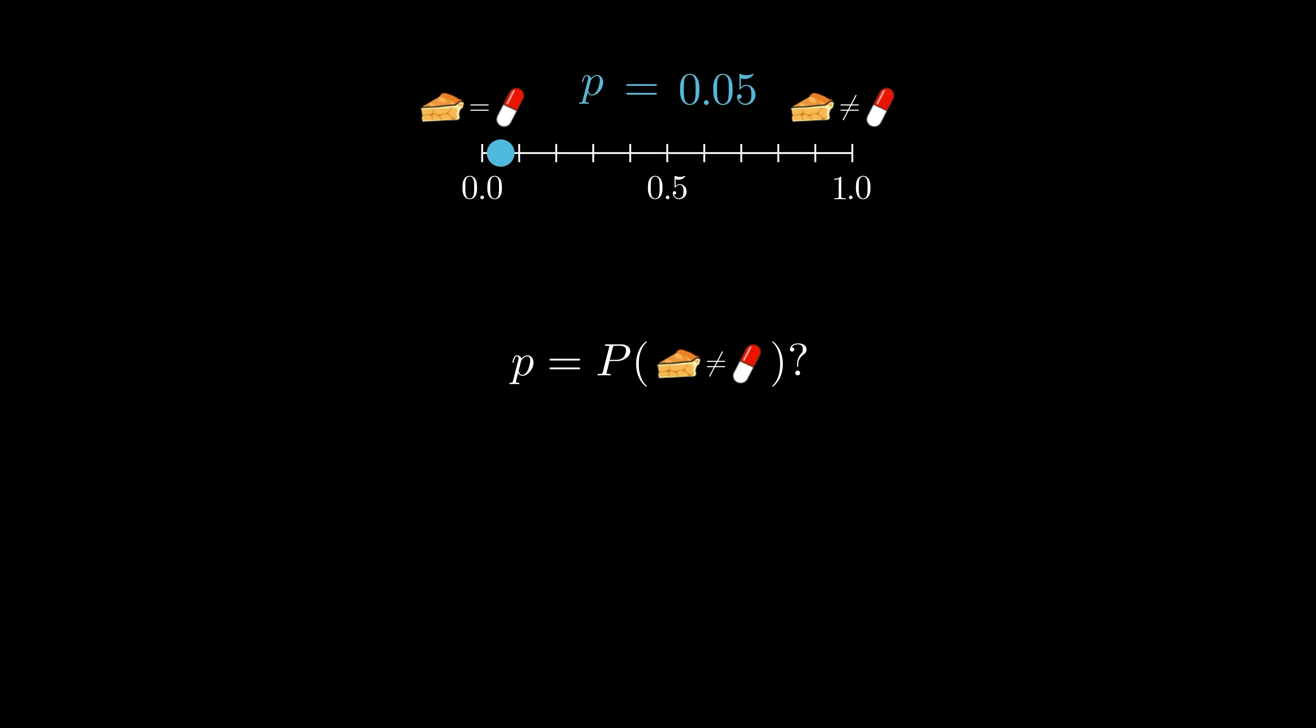is that they represent the probability that this effect does not exist. Here, by the way, I'm using a capital P to mean the probability of, and a lowercase p to mean the p-value.